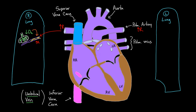Hypoxic means low oxygen, pulmonary refers to the lungs, and vasoconstriction means making the blood vessels tight. This process happens in adults too, but it's especially important in the fetus because both lungs are full of fluid. It causes the blood vessels to constrict and really raises the amount of resistance that the pulmonary arteries are facing.